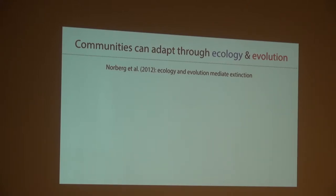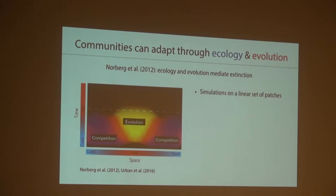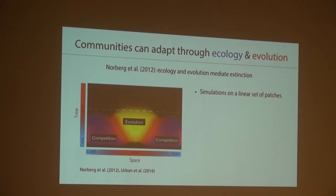In terms of evolutionary processes such as local adaptation, individuals within a population that are better adapted will be favored by natural selection. Most studies consider either only ecological or evolutionary processes when thinking about adaptive potential, but in 2012 Norberg et al. performed a simulation study incorporating both, and found that both mediate extinction risk. Their setup had simulations on a linear set of patches across a latitudinal gradient — cooler patches at the ends representing the poles, and warmer patches in the middle representing the equator. They then performed temperature increase experiments.